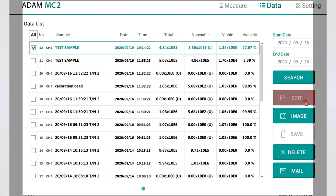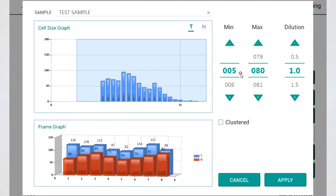Edit is for cell size gating, image is for checking the captured image, and you can export the data or send the data using save and mail function.